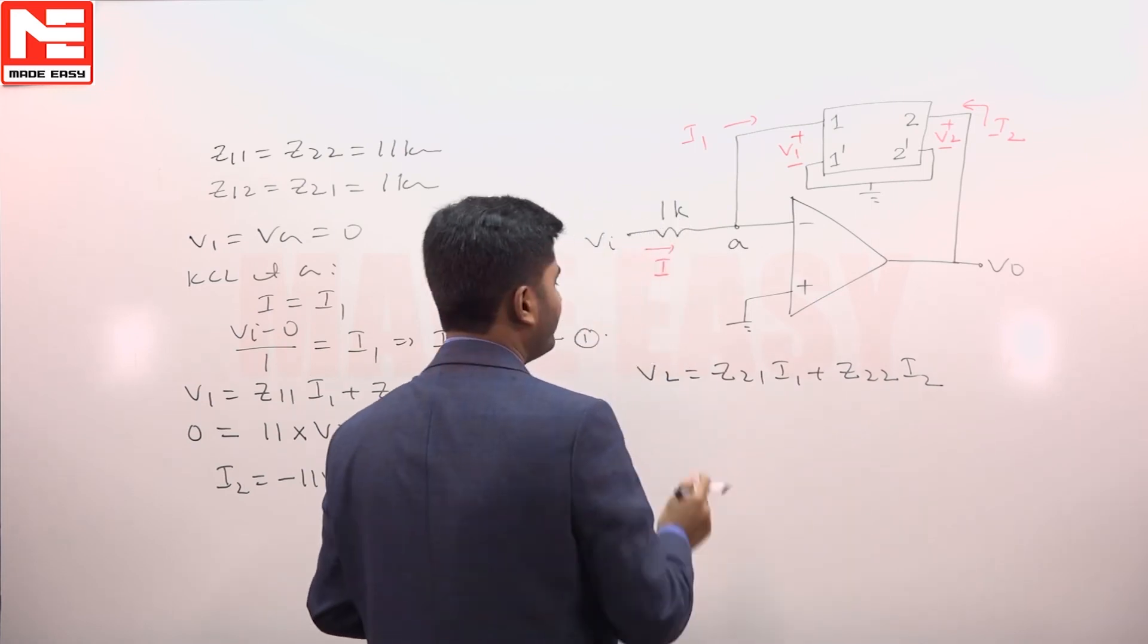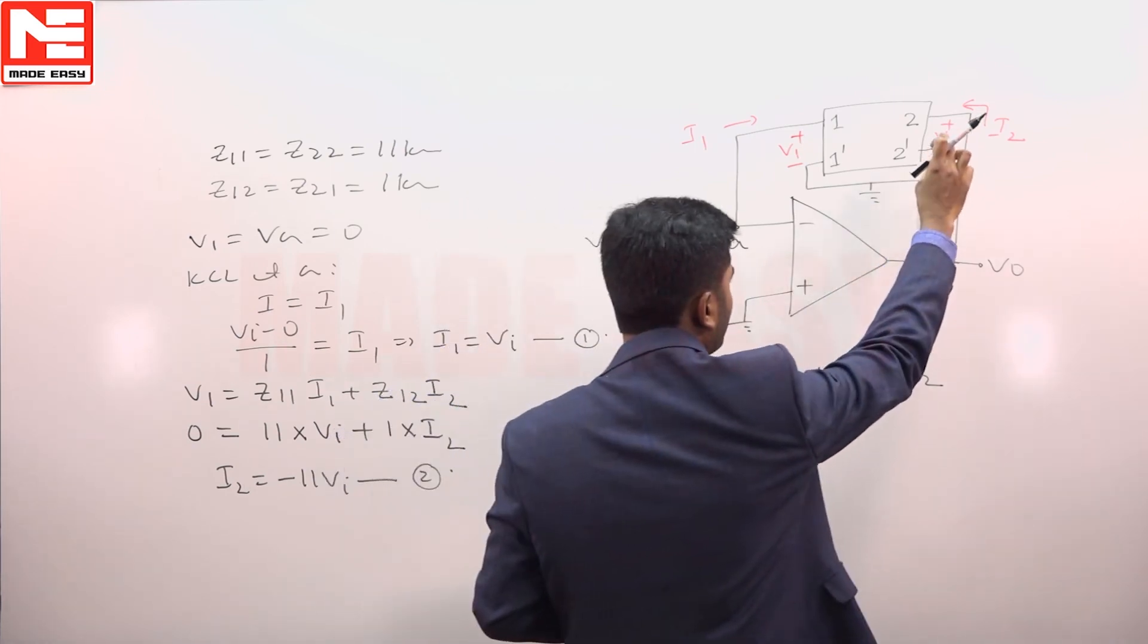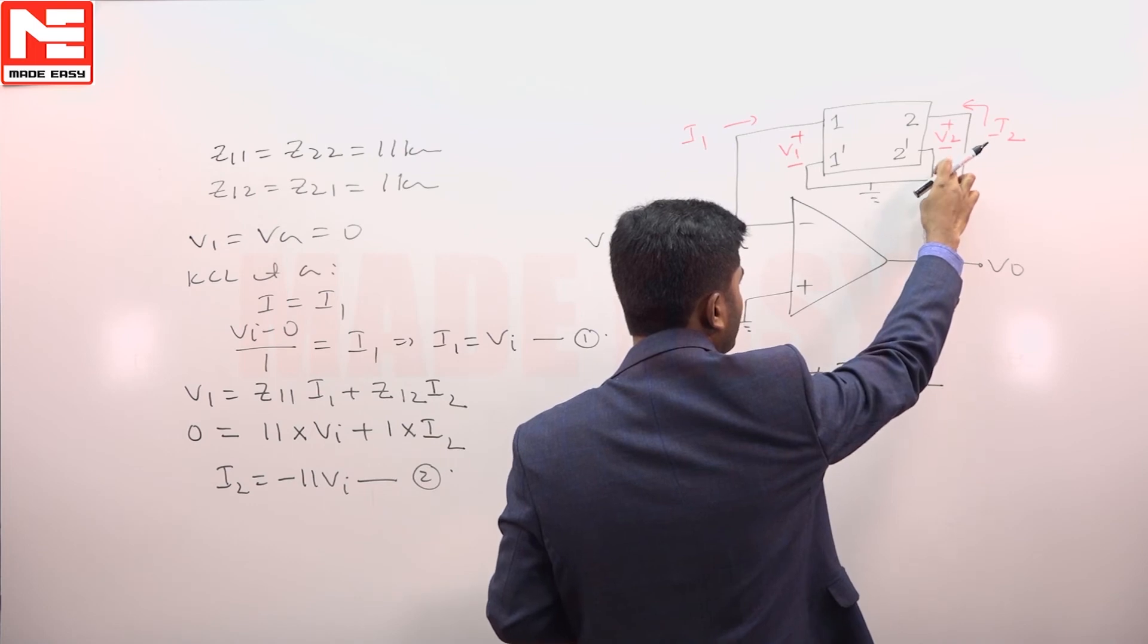Where V 2 is the voltage of port 2, and that port 2 voltage V 2 can also be taken as V 0.